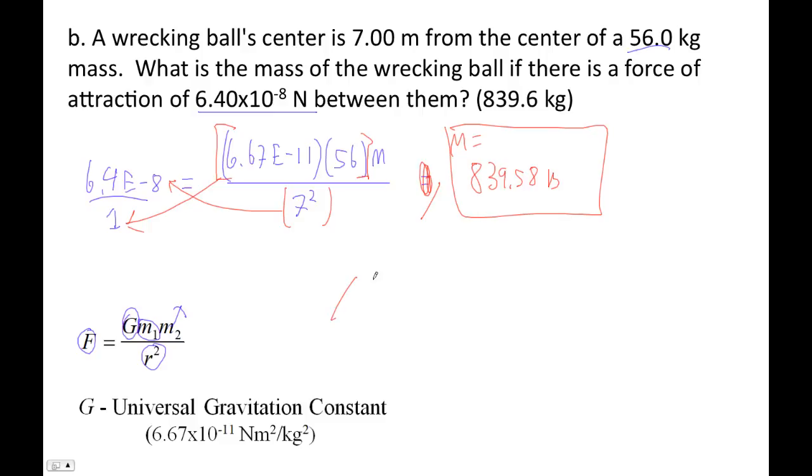Or alternately, you could go divided by parentheses 6.67 E minus 11, times 56, right? So two ways to type that. One way and the other way is divided by 6.67 E minus 11, divided by 56. These are equivalent. Just the trick here is getting the number with your calculator. Figure out what works for you.